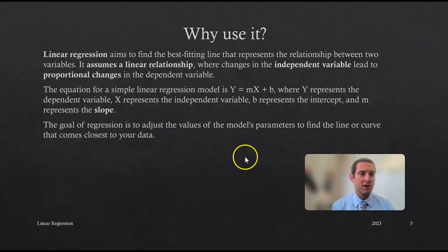Why do we use linear regression? It aims to find the best fitting line that represents the relationship between two variables. It assumes a linear relationship where changes in the independent variable lead to proportional changes in the dependent variable.